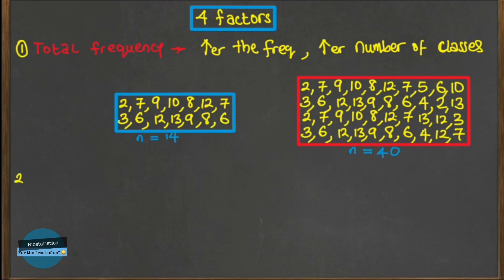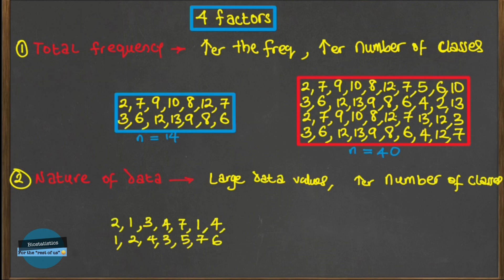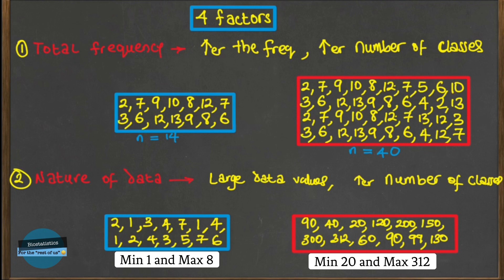The second factor is the nature of the data — the size or magnitude of the values of the data points. If the data values are very large and widely spaced apart, this will affect the number of groups you need to form. Consider two data sets: the first has small data values all under 10, while the other has large data values — one even reaches 312 — and also has widely spaced values. Which should have more groups?